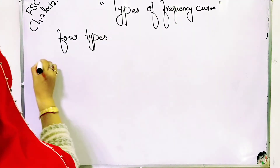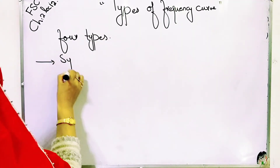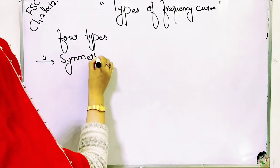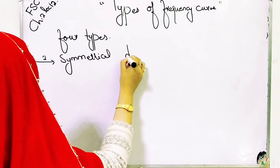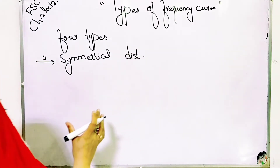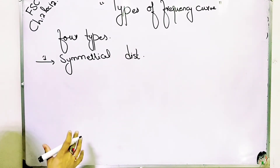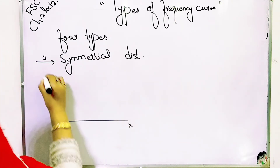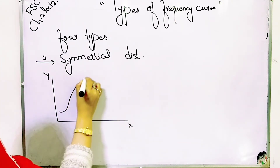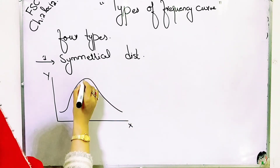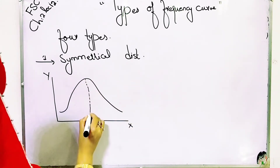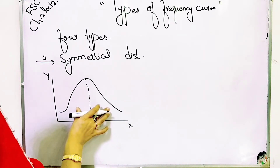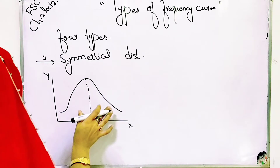First and most important is the symmetrical distribution. I will tell you the shape of this and then write something about it. The shape of the symmetrical distribution is like this — we say the area under the curve is equal to one and mu is equal to zero. It is the normal distribution. Symmetrical distribution is the normal distribution.